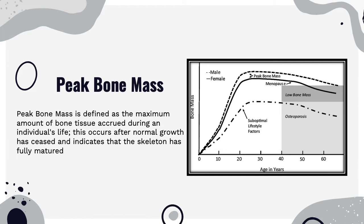If you're not optimizing your peak bone mass and maintaining it in adulthood, you put yourself at higher risk for fragility fractures later in life. In a healthy population, genetics determine around 60 to 80% of your peak bone mass. But this predetermined trajectory can be influenced by modifiable environmental factors — in particular, physical activity and optimal nutritional intake of protein, calcium, and vitamin D. If you don't take care of your bones, you may not reach peak bone mass and could develop osteoporosis earlier in life.